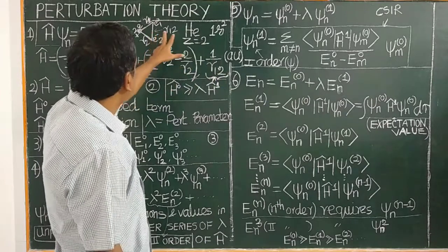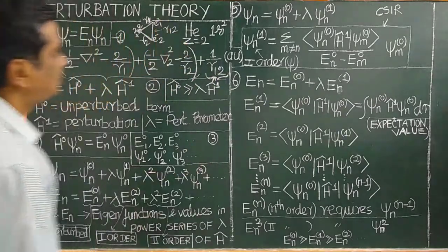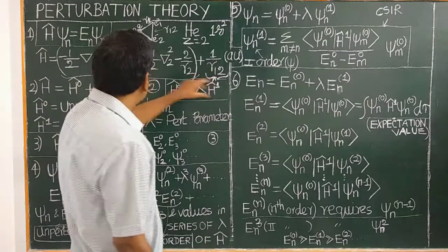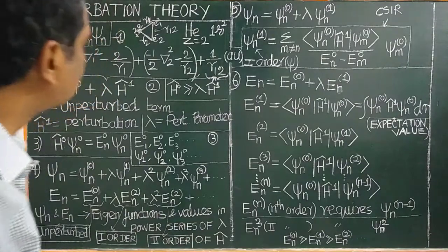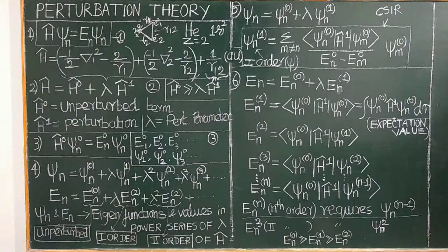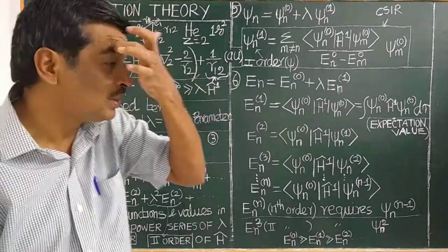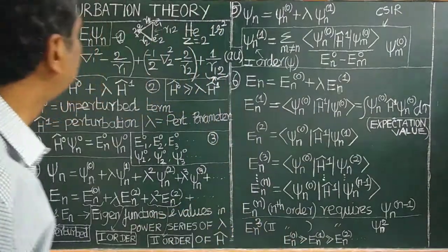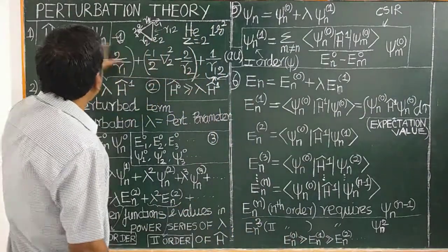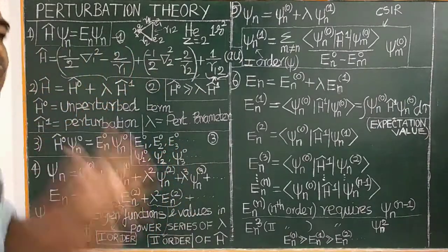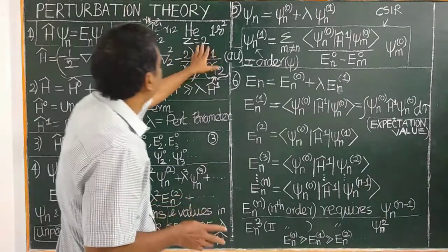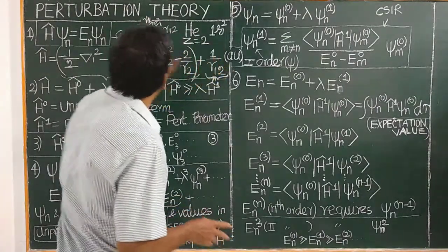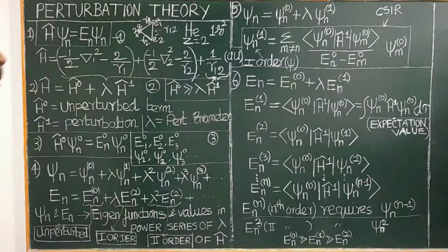Because of this inter-electronic repulsion term, the Schrödinger wave equation cannot be readily solved. Therefore, approximation methods are used. Because of this term, it cannot be split into two one-electron wave equations. Using approximation methods, the solution and energies can be obtained.